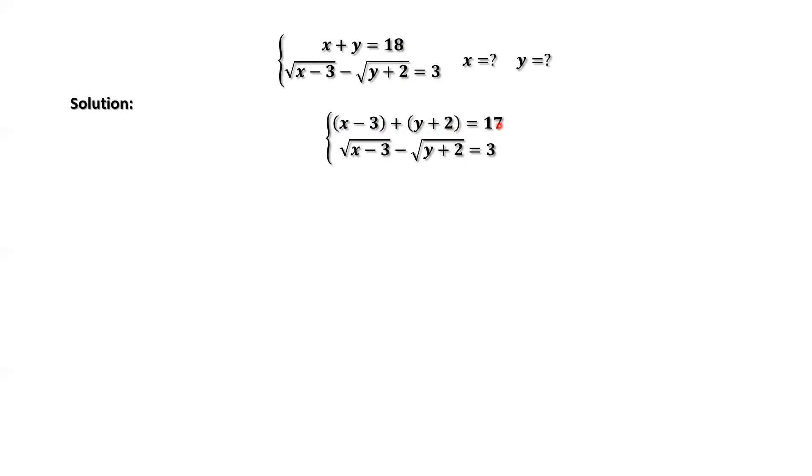We are ready to define new variables. We define square root of x minus 3 equals u, and square root of y plus 2 equals v. Then we have u minus v equals 3, and u squared plus v squared equals 17.